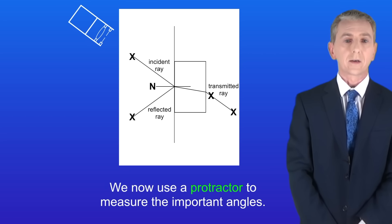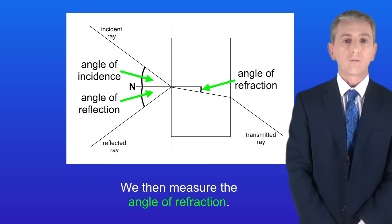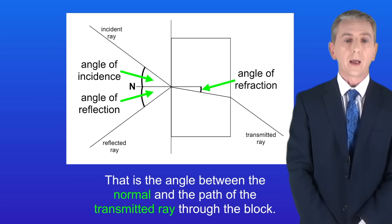Okay we now use a protractor to measure the important angles. I'm showing you a close-up now so you can see these angles more clearly. So we need to measure both the angle of incidence and the angle of reflection like this. We then measure the angle of refraction and I'm showing you that here. That's the angle between the normal and the path of the transmitted ray through the block.